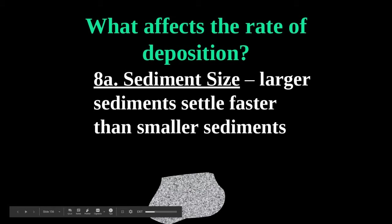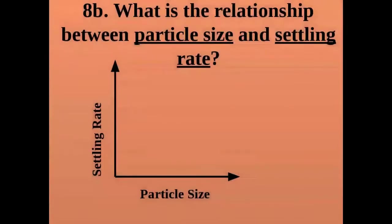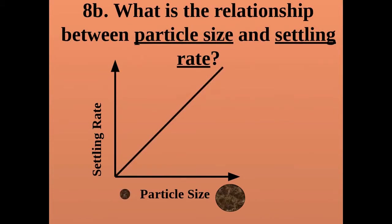Now, what factors affect the rate at which a particle is deposited? First, sediment size — larger sediments settle faster than smaller sediments. This is item 8a in your notes. For item 8b, graph the relationship between particle size and settling rate. As particle size increases, the settling rate also increases — it's a direct relationship.